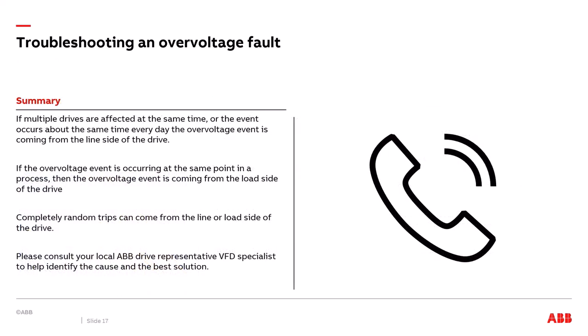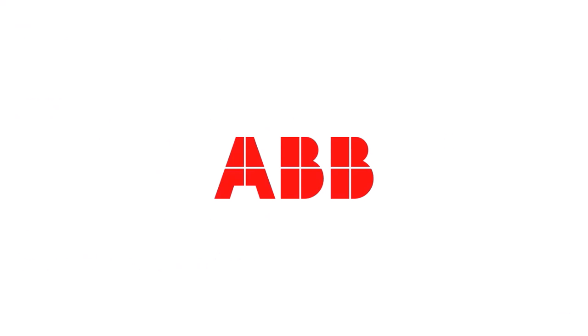In summary: if multiple drives are affected simultaneously or the event occurs at the same time every day, the overvoltage trip is coming from the line side. If the overvoltage occurs at the same point in a process application, the trip is coming from the motor or load side of the drive. If you have completely random trips, it could be either line side or load side. Reach out to your local ABB drive representative or VFD specialist — they can help troubleshoot the cause and implement the best solution to resolve the issue as quickly as possible. Thank you.